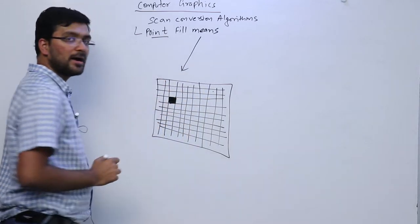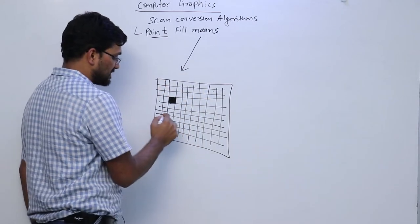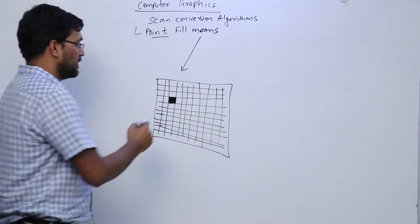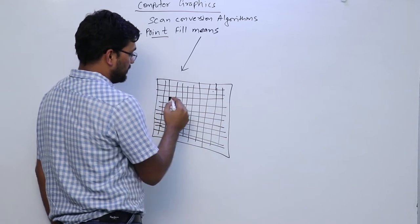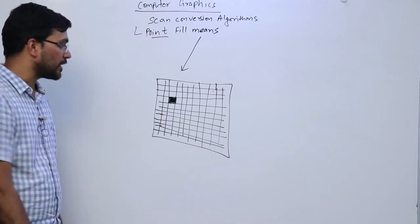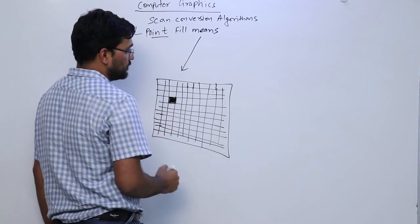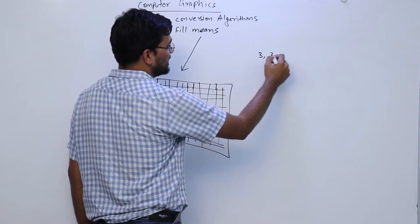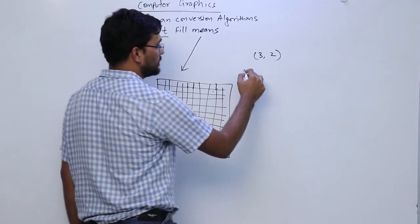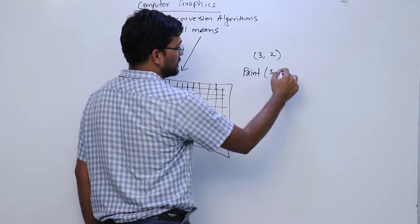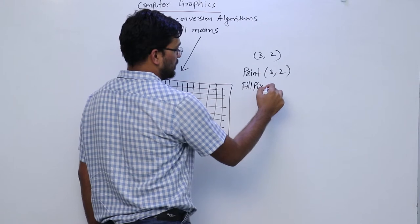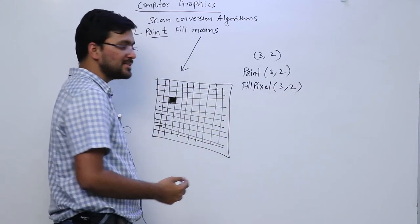We will be seeing the point algorithm first. What does a point fill mean? A point fill means on a particular screen I have to fill a point. So how does a point get filled — we have just drawn one pixel. That means I have filled a particular point. So similarly if I ask you to fill, let's say, point 3,2 — I want to fill a point at 3,2 — what I can write is: paint(3,2), or I can have any function name like fill_pixel(3,2).